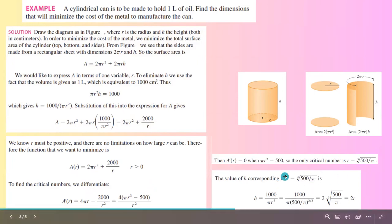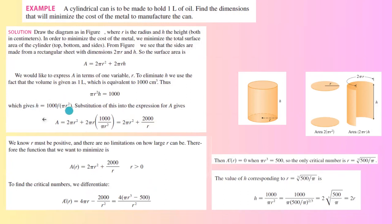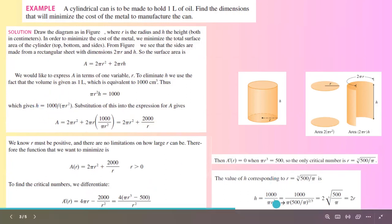And then once you substitute this back into this formula, h becomes 1000/(πr²) or 1000/(π(500/π)^(2/3)). Or after simplifying the whole thing, a relation between h and r: h becomes 2r.